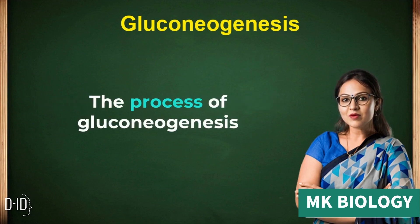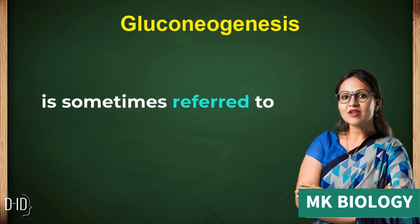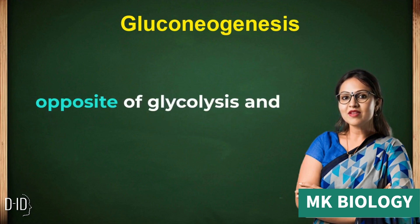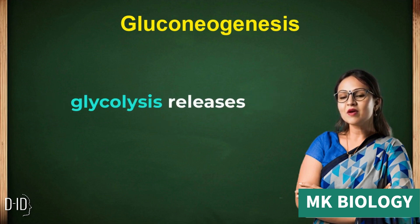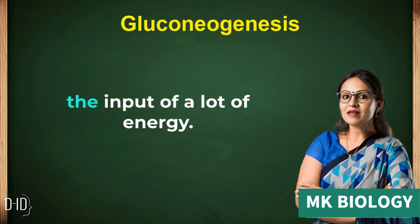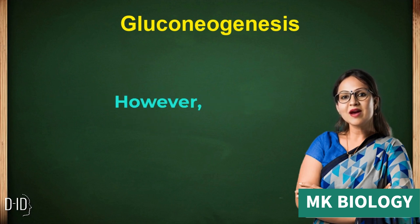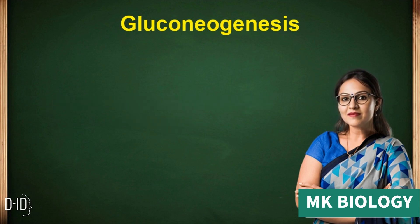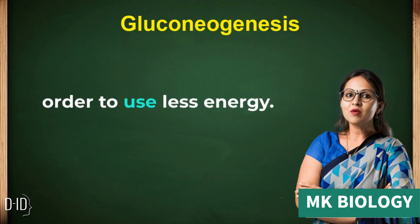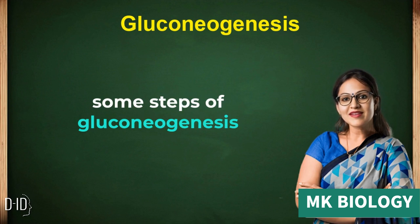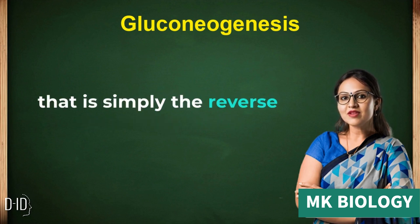The process of gluconeogenesis is sometimes referred to as endogenous glucose production, EGP, because it requires the input of energy. Since gluconeogenesis is the opposite of glycolysis, and glycolysis releases a lot of energy, it would be expected that gluconeogenesis would require the input of a lot of energy. However, gluconeogenesis occurs when the body is already low on energy, so it requires workarounds in order to use less energy. Therefore, some steps of gluconeogenesis cannot be performed in a way that is simply the reverse of glycolysis.